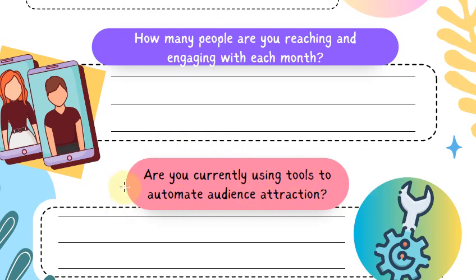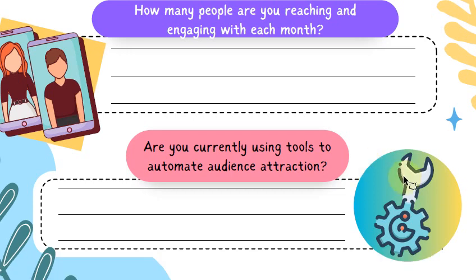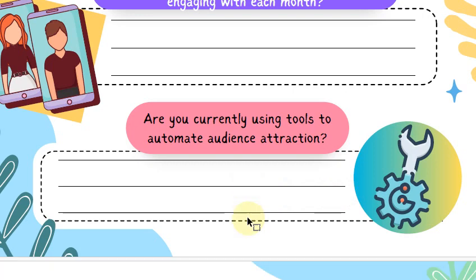Are you currently using tools to automate audience attraction? We can introduce you to tools that let you set up your social media posts on autopilot. You can pick a day of the week, load up all your posts, and plan them so you have a targeted message going out every single day — not just randomly posting, but with a method. You can plan your posts to give your social media feed cohesion, consistency, and great messaging. If you have questions about that, feel free to reach out and we can show you the tools to automate your social posts.